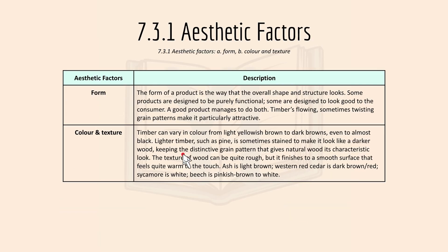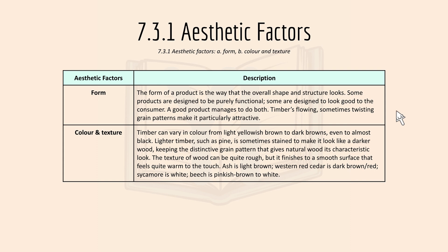Moving on to 7.3.1, aesthetic factors, which include form, color, and texture. The form of a product is the way the overall shape and structure looks. Some products are designed to be purely functional and some are designed to look good to the consumer, and a good product manages to do both. Timber's flowing, sometimes twisting grain patterns make it particularly attractive.